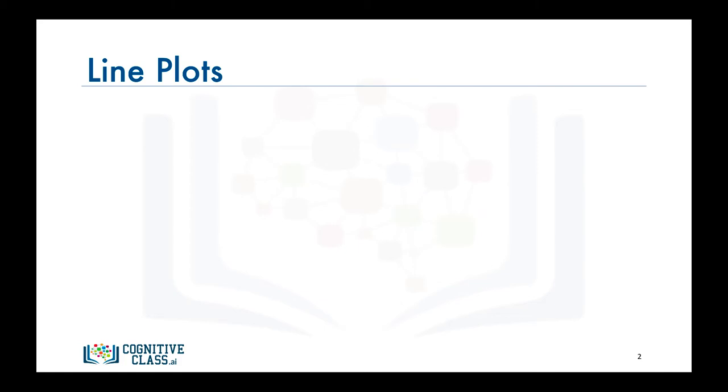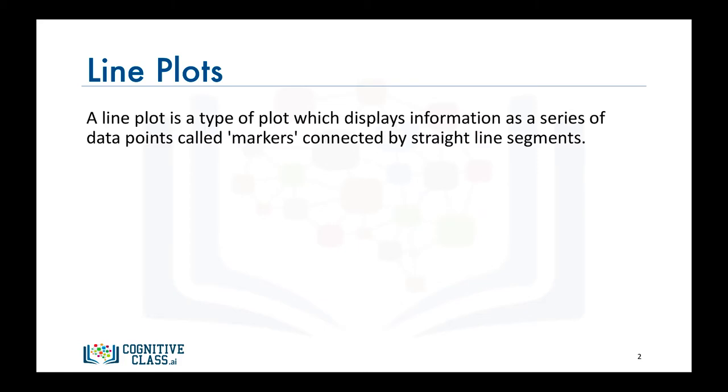So what is a line plot? As its name suggests, it is a plot in the form of a series of data points connected by straight line segments. It is one of the most basic types of charts and is common in many fields, not just data science.